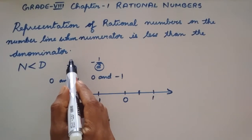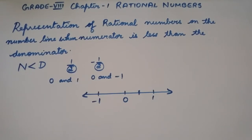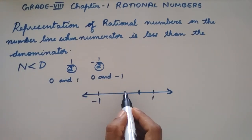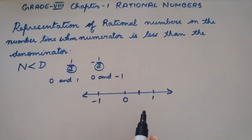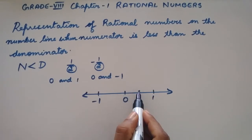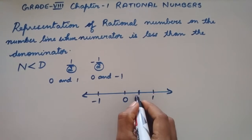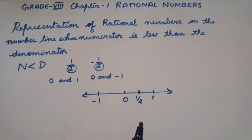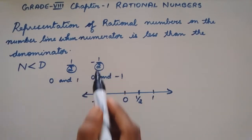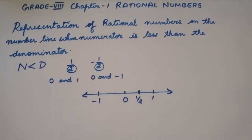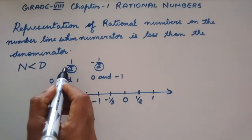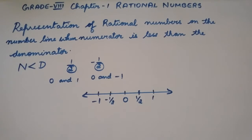What does the numerator tell us? It tells us the number of parts starting from 0. Here the numerator is 1, so we take 1 part from 0 and mark 1 by 2 here. Also we can use the same procedure to mark minus 1 by 2 on the left side of 0: divide into 2 equal parts and mark minus 1 by 2, that is 1 part away from 0. Is this clear, students?